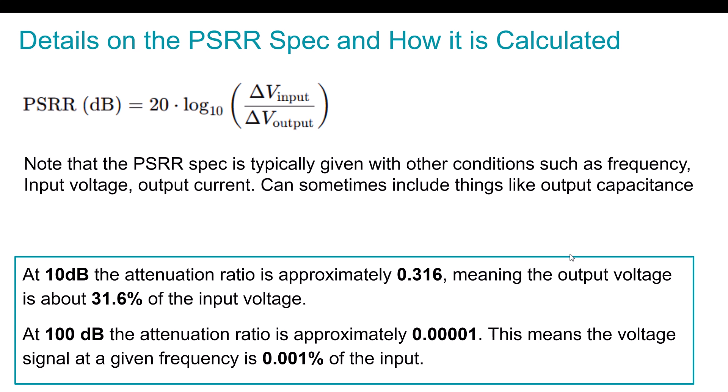Okay, so let's dive into what the PSRR spec is and how it's calculated. So it's represented as a ratio in dB or decibels, right? So this is a log-based calculation. But essentially, it's the delta input voltage to the delta output voltage, or the change in the input voltage, and how that change is translated to the output voltage, right? So this is a ratio. We're looking at a ratio.